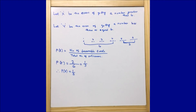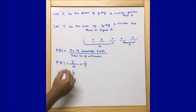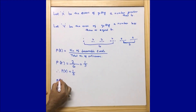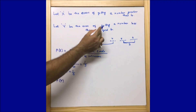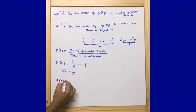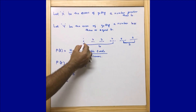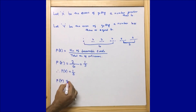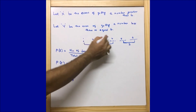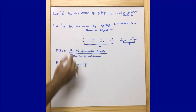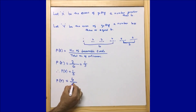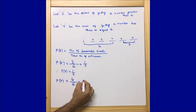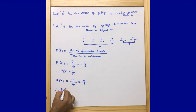Now for the second part — getting a number less than or equal to 4 — Y is that event. So P(Y) equals number of favorable events, which is 4 (that is 1, 2, 3, 4, which are either equal to or less than 4), upon total number of outcomes, which is 6. Therefore, P(Y) = 4/6 = 2/3.